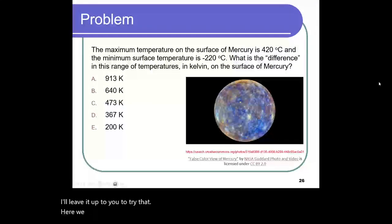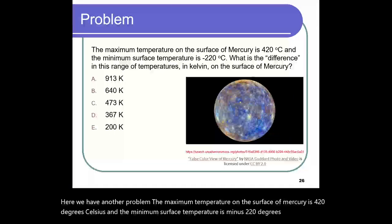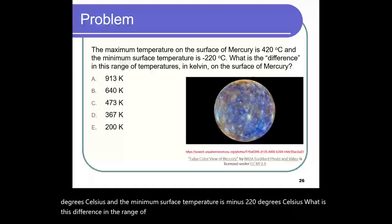Here we have another problem. The maximum temperature on the surface of Mercury is 420 degrees Celsius, and the minimum surface temperature is minus 220 degrees Celsius. What is this difference in the range of temperatures in Kelvin on the surface of Mercury?